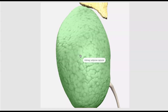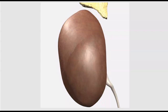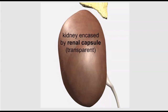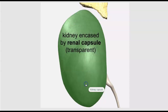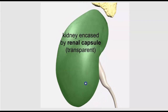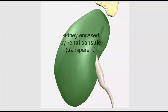Removing the adipose tissue, we can finally see the outer surface of the kidney, but it's hard to tell that there's a dense, fibrous, tough membrane that encases all of this called the renal capsule, highlighted green here.